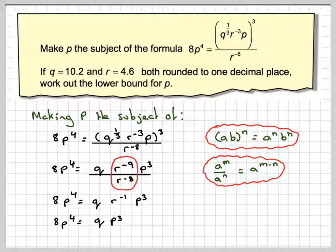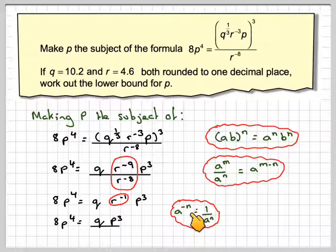Now R^(-1), if we think of A^(-N) equals 1 / A^N, so this becomes 1 / R. So we need to divide by R. So we've got 8P^4 = Q * P^3 / R. And finally...